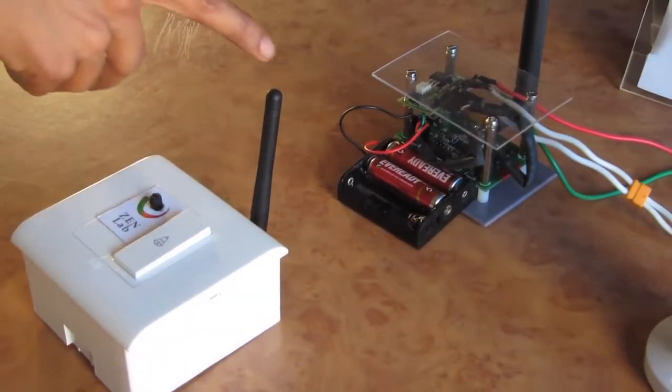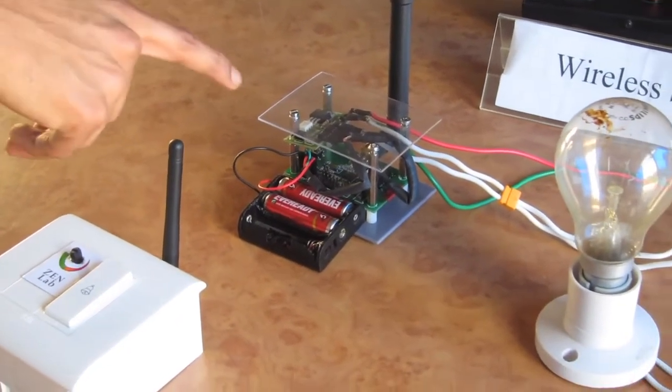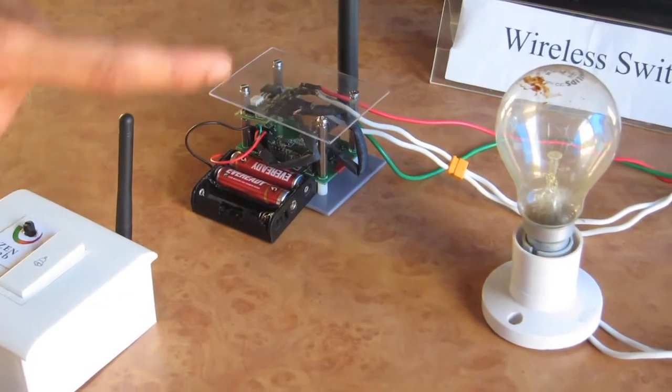This is the receiver. We have another CC2530 microcontroller and dimmer is used to actually control the load intensity.